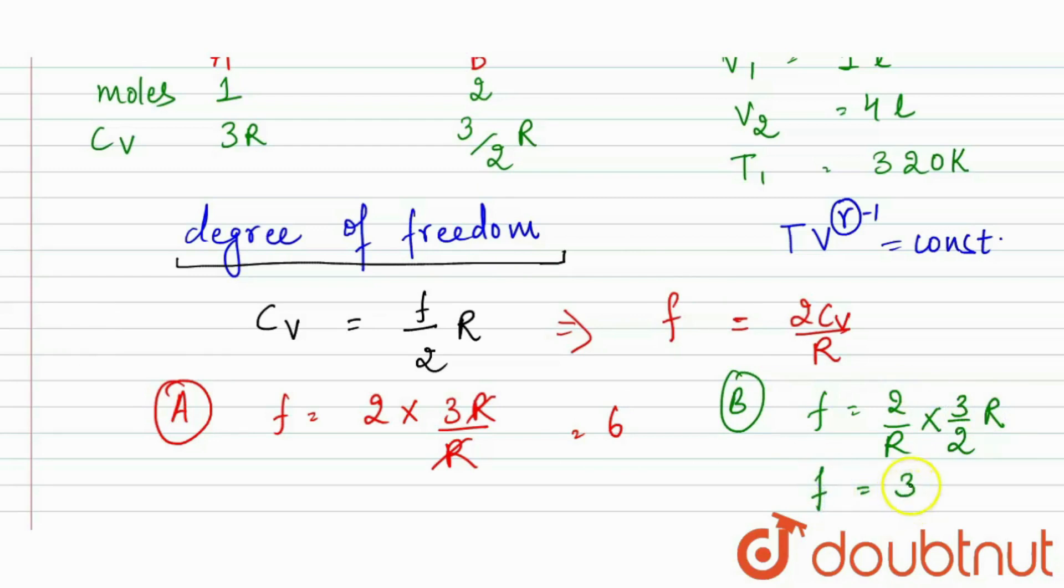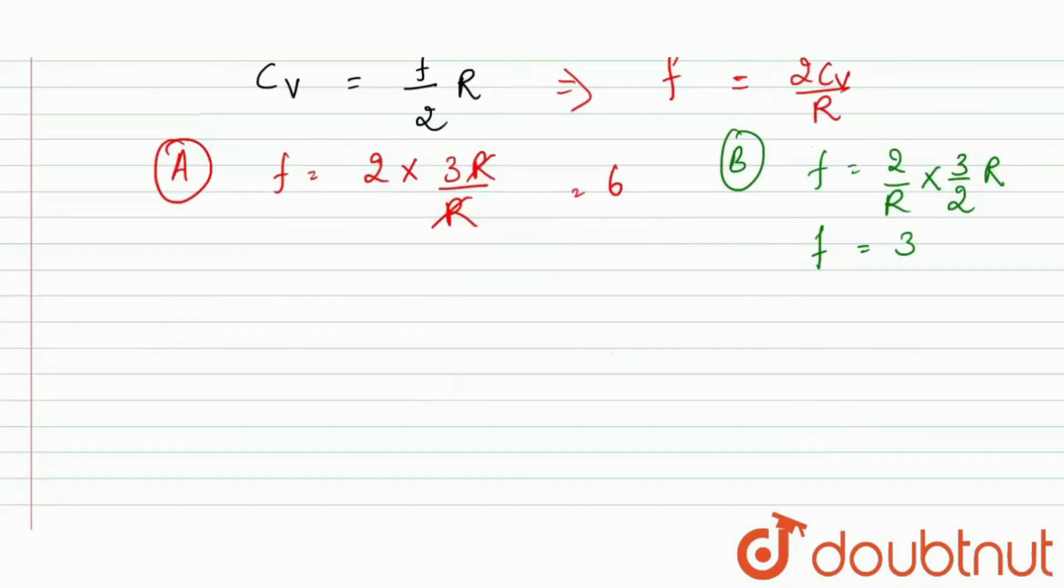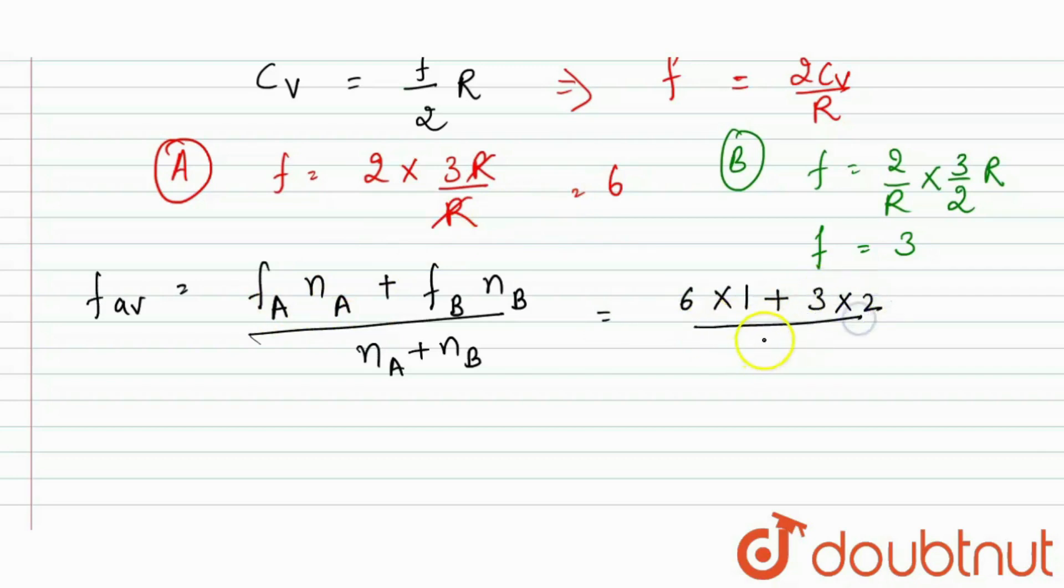In this case, the value of F is equal to 3. Now we need to find out the average of degree of freedom. F average equals degree of freedom for A times number of moles of A plus degree of freedom of B times number of moles of B upon total moles nA plus nB. So it's 6 into 1 plus 3 into 2 upon 1 plus 2, which is 6 plus 6 equals 12, 12 by 3 equals 4. Now gamma equals 1 plus 2 upon the average degree of freedom, so it's 1 plus 2 upon 4, which equals 3 by 2.